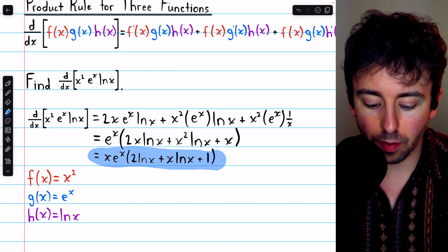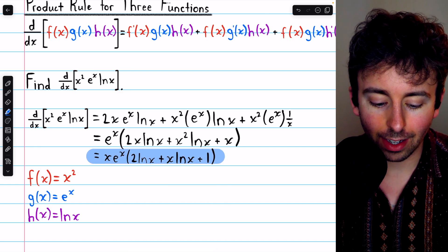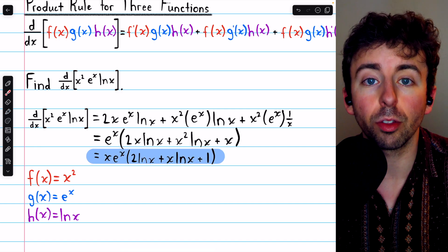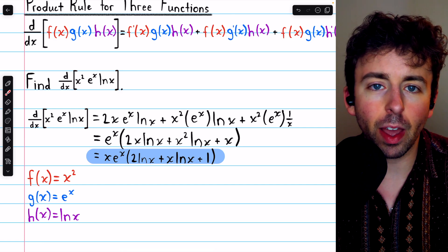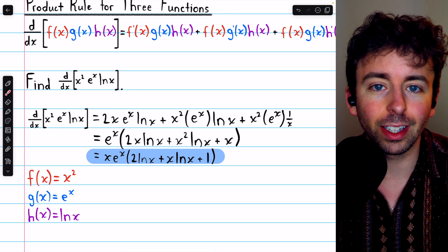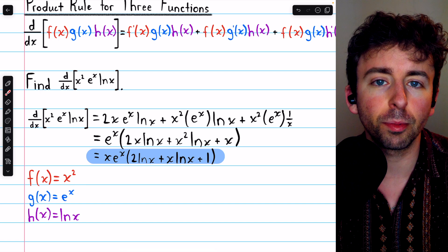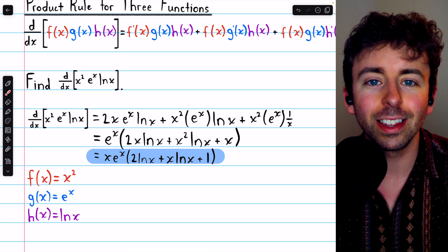And that is the derivative of x squared e to the x ln x, using the product rule for three functions. Let me know in the comments if you have any questions, and be sure to check out my Calculus 1 course and Calculus 1 exercises playlists in the description for more. Thanks for watching!